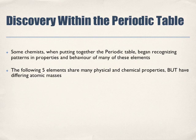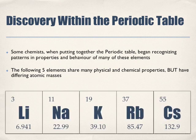Discovery within the Periodic Table: some chemists, when putting together the Periodic Table, began recognizing patterns and properties and behavior of many of their elements. The following five elements share many physical and chemical properties, but have differing atomic masses. In your worksheets, you have the empty boxes, and within here we have the following five elements. What's so special about these five elements?